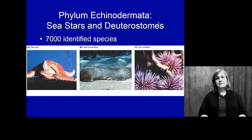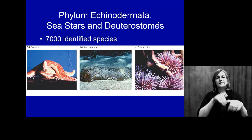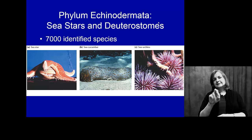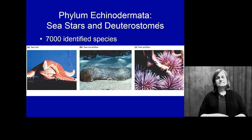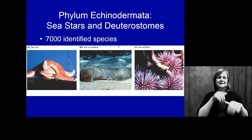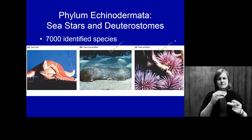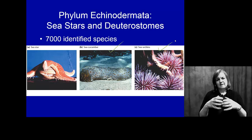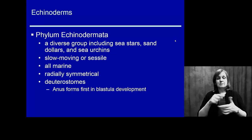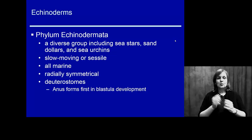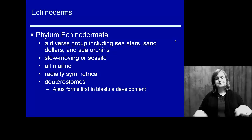In echinoderms, we include primarily the sea stars or starfish. We also look at sea cucumbers, sea urchins, and those kinds of organisms. This is one of our smaller phyla with only about 7,000 identified species, but they are still a giant group to contend with as far as their diversity goes.